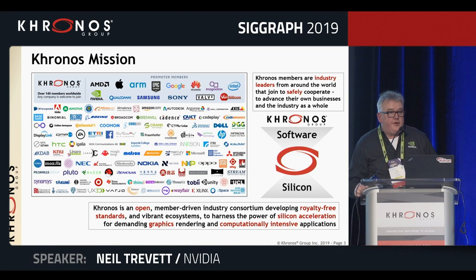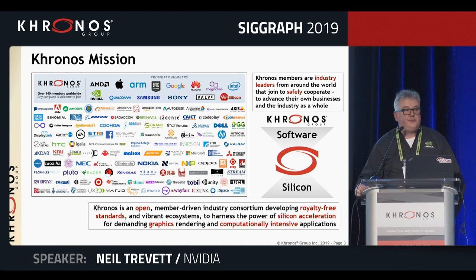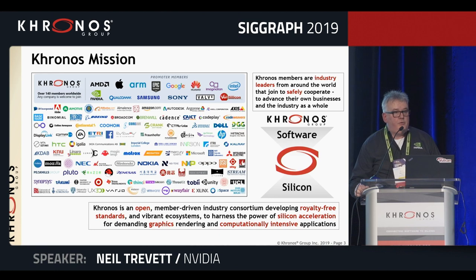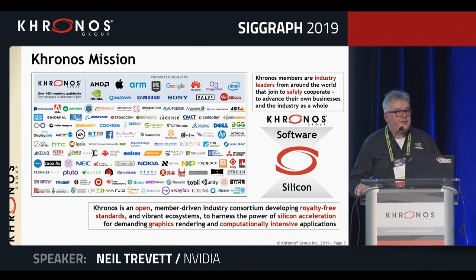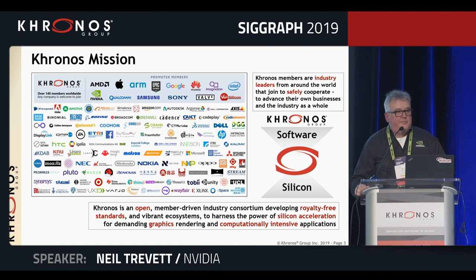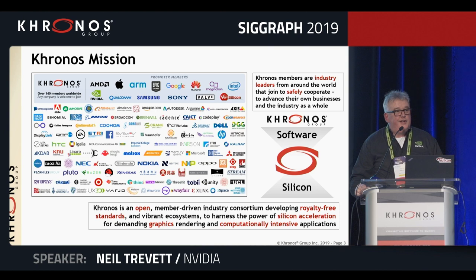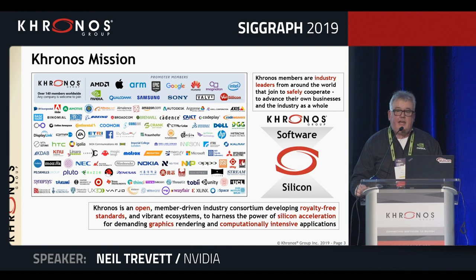I'm sure most of you have heard of Kronos, but for those that haven't: who is Kronos? We are a standards organization, an open consortium — anyone can join. We are committed to open and royalty-free standards for the industry to use. Our particular focus are standards to let software developers access the power of accelerator silicon: 3D graphics, parallel computation, vision processing, and increasingly machine learning. So if you're developing forward-looking applications that need hardware acceleration, hopefully the APIs we're building can be of good use to you.